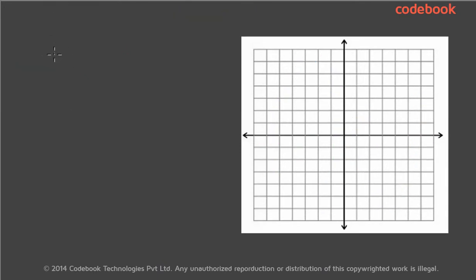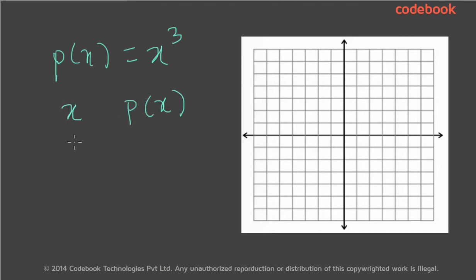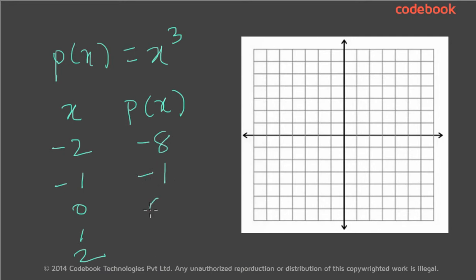Now let's look at another example. Consider the polynomial p of x equal to x cubed. Let's calculate p of x for various values of x: minus 2, minus 1, 0, 1, and 2. When x is minus 2, p of x is minus 8. When x is minus 1, p of x is minus 1. When x is 0, p of x is 0. When x is 1, p of x is 1. And when x is 2, p of x is 8.